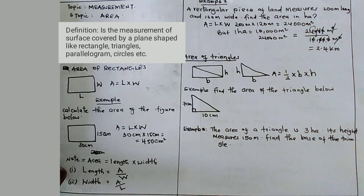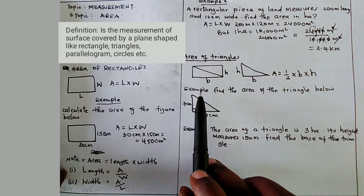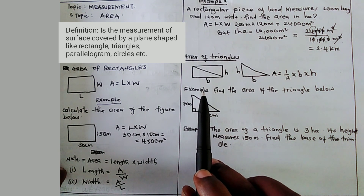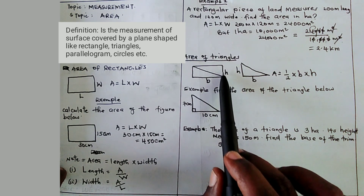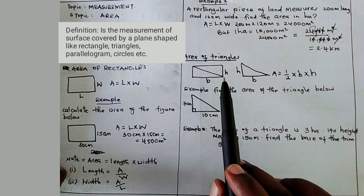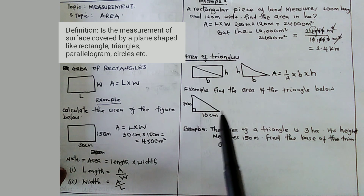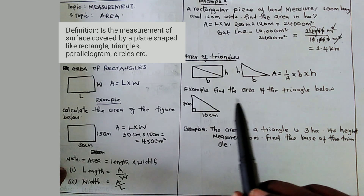We now move to area of triangles. A triangle is half of a rectangle. The horizontal length is the base, while the vertical length is the height. The base and the height of a triangle must be perpendicular to each other.